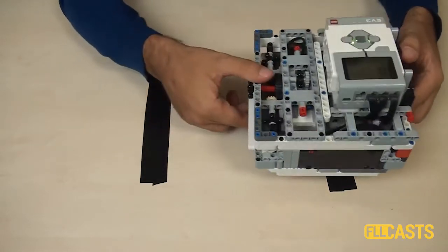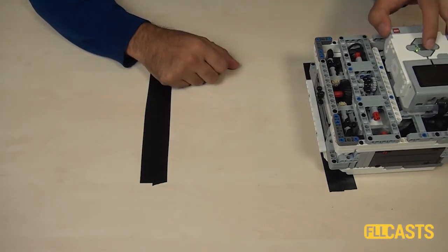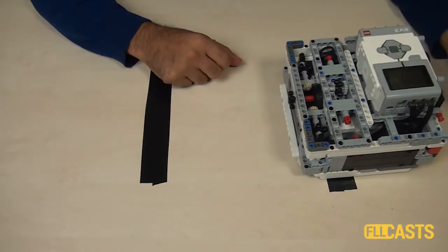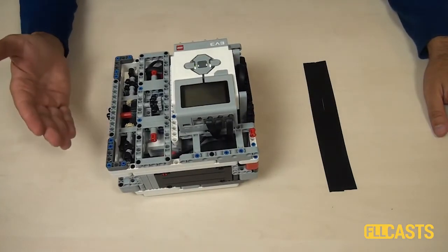How does the program behave at the end? At the end, we have a program and we start the program. It calibrates and then it stops at the next black line.